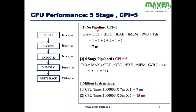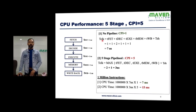If we consider no pipeline, CPI is one and T_clock is the sum of all propagation delays. We add all delays plus setup time and hold time — together one nanosecond — so fetch, decode, execute, memory, and write back total six nanoseconds, plus setup and hold time gives seven nanoseconds overall. For a five-stage pipeline processor, the CPI becomes five.